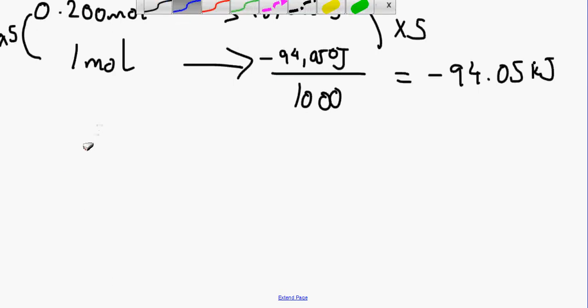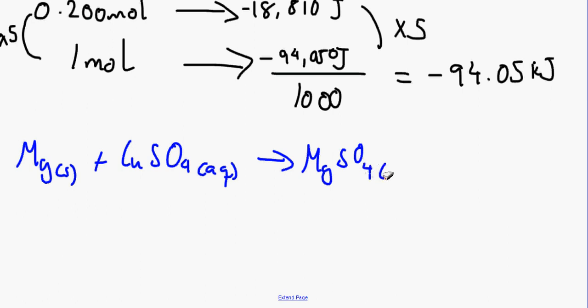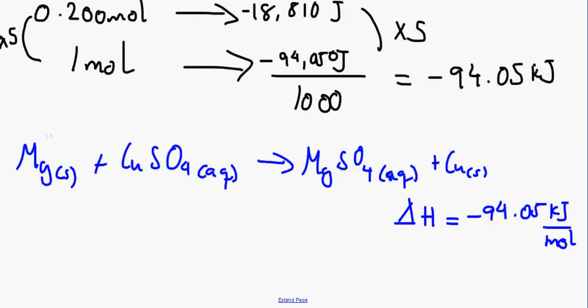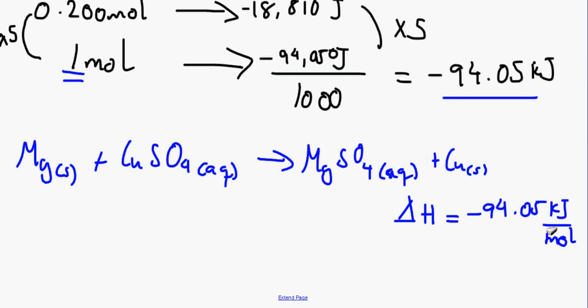To sum up: Mg(s) + CuSO₄(aq) → MgSO₄(aq) + Cu(s), and delta H = −94.05 kJ/mol. Remember we did this per one mole, which is why the unit is kJ/mol. For each mole reacted, 94.05 kJ of energy is released. This is an exothermic reaction. And that is it for determining the enthalpy change using the surroundings.